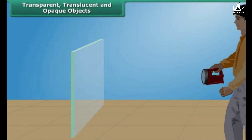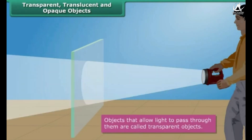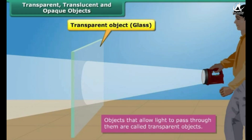Objects are classified as transparent, translucent, or opaque depending upon their treatment of light. Objects that allow light to pass through them are called transparent objects. Most of the light falling upon a transparent object passes through it to the other side, thereby allowing us to see through them.